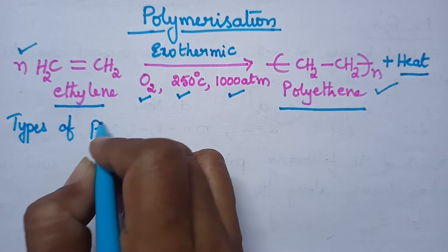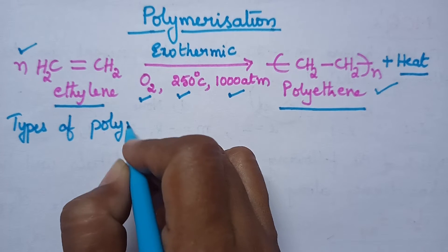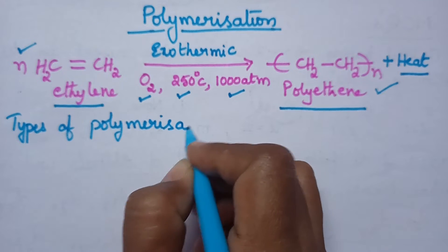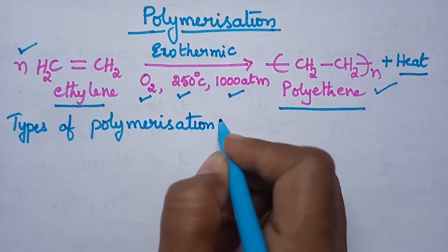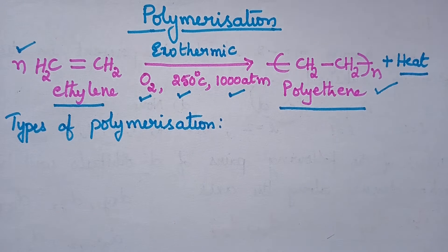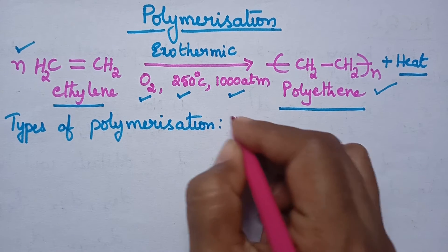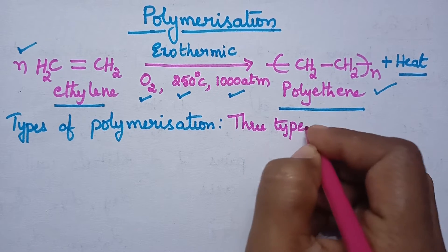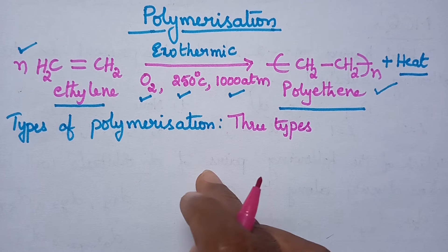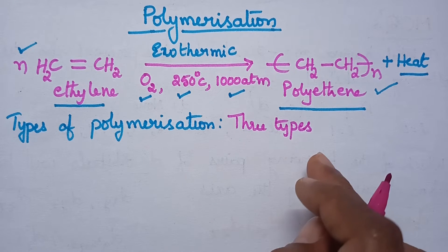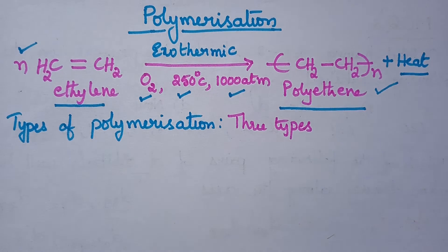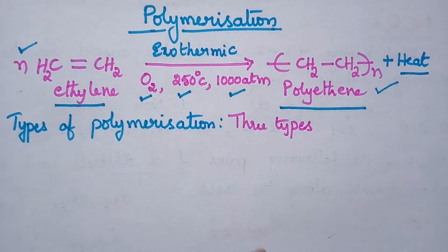Coming to the types of polymerization, polymerization can be classified into three types: namely addition polymerization, condensation polymerization, and co-polymerization. Let us discuss in brief about each category of polymerization.